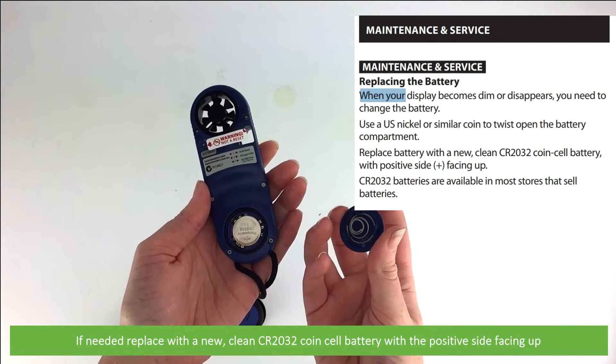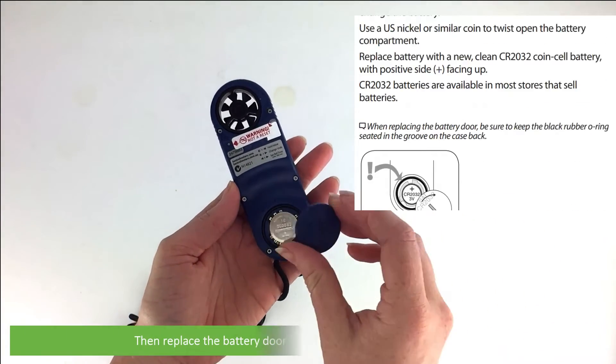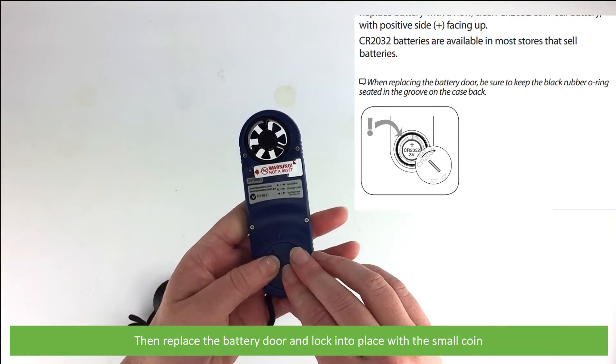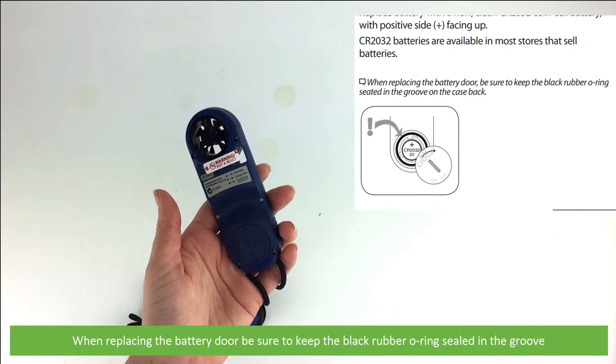If needed, replace with a new, clean CR2032 coin cell battery with the positive side facing up. Then replace the battery door and lock into place with a small coin. When replacing the battery door, be sure to keep the black rubber O-ring sealed in the groove.